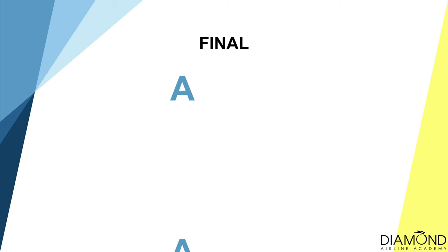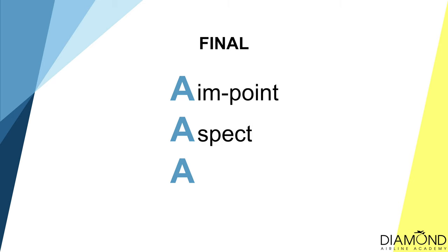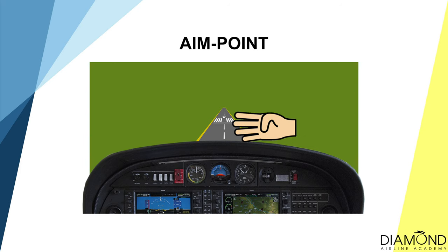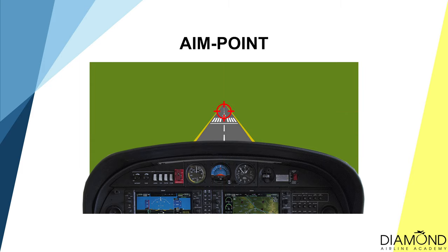As we track along final, adopt the AAA work cycle: Aim point, Aspect, Airspeed. The aim point is the second centre line marking after the threshold — the point we aim to land at if not flaring. To aim at it properly, find a crosshair on the windscreen by placing four fingers on top of the dashboard right in front of your body centre line. The point where the top of your four fingers and your body centre line intersect is your crosshair. During the final leg, align the aim point with the crosshair by constant fine adjustment on the control stick.